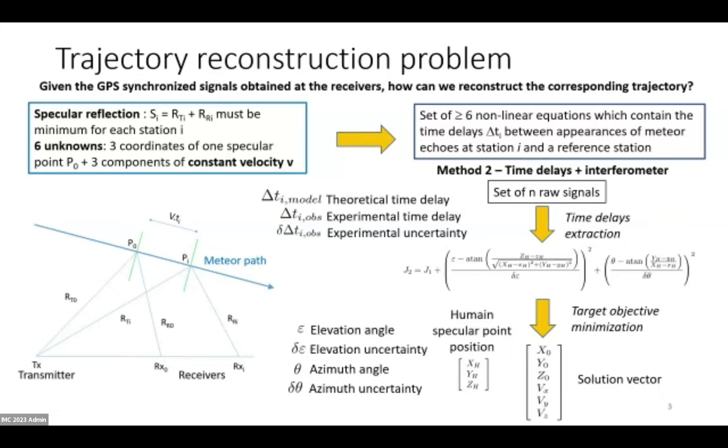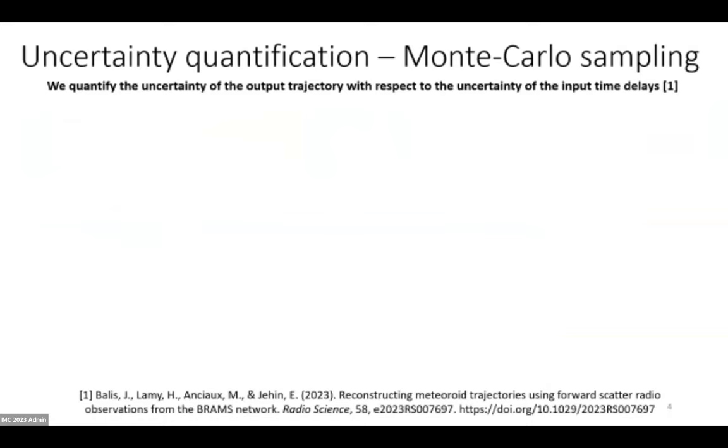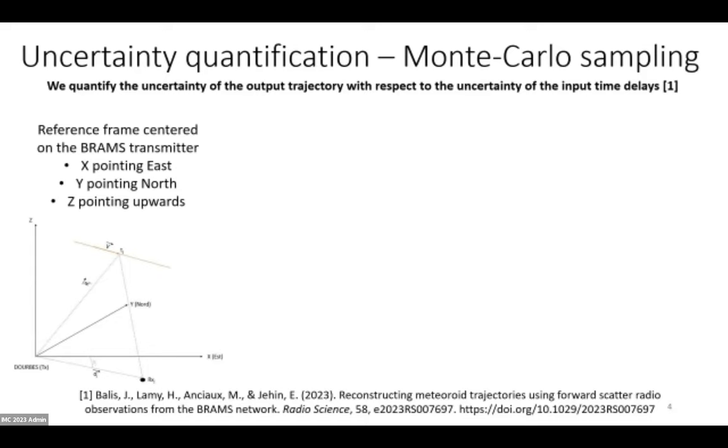We've validated those approaches with simulations, but the issue is that in practice we do not have perfect measurements. In practice, we measure the time delays with certain uncertainties, and we'd like to know how that will affect the reconstructed trajectory. To explain the results that we obtain with this uncertainty quantification campaign, I introduce this reference frame which is centered on our transmitter. We have the X-axis pointing east, Y-axis pointing north, and the Z-axis which complements the reference frame.